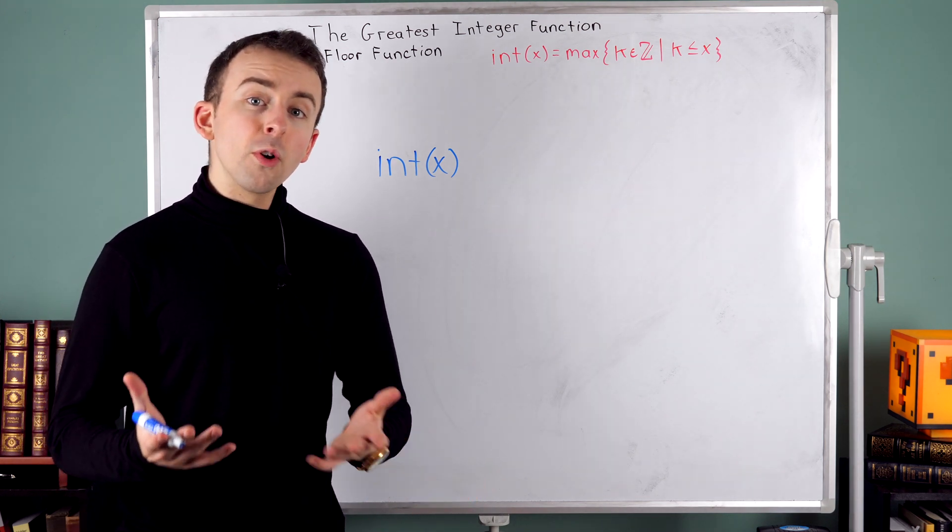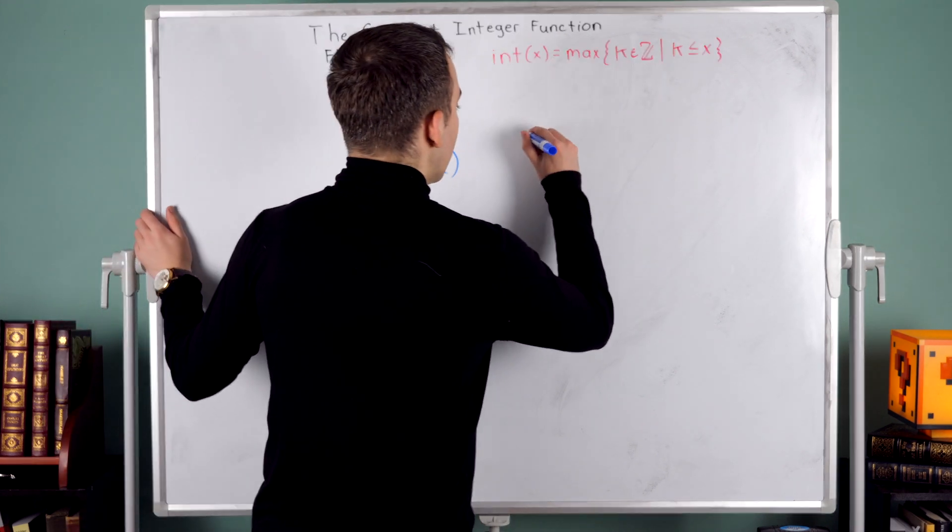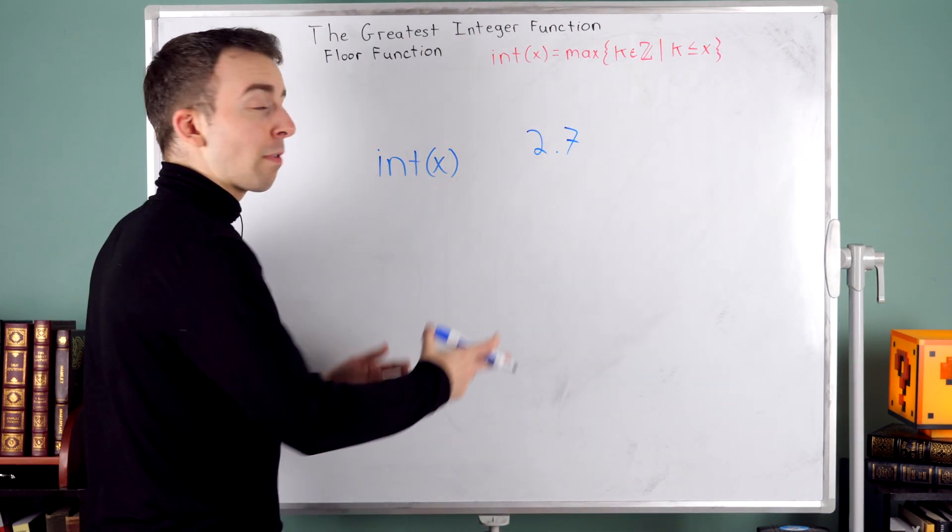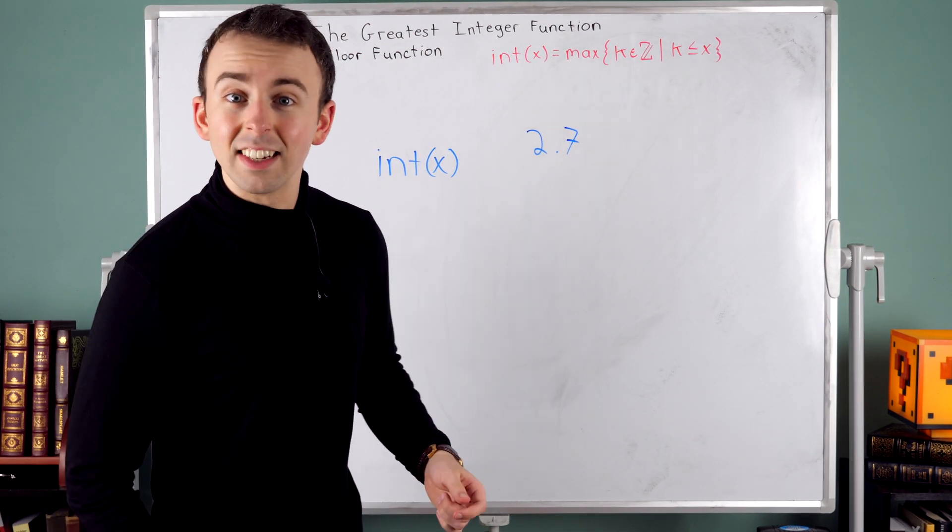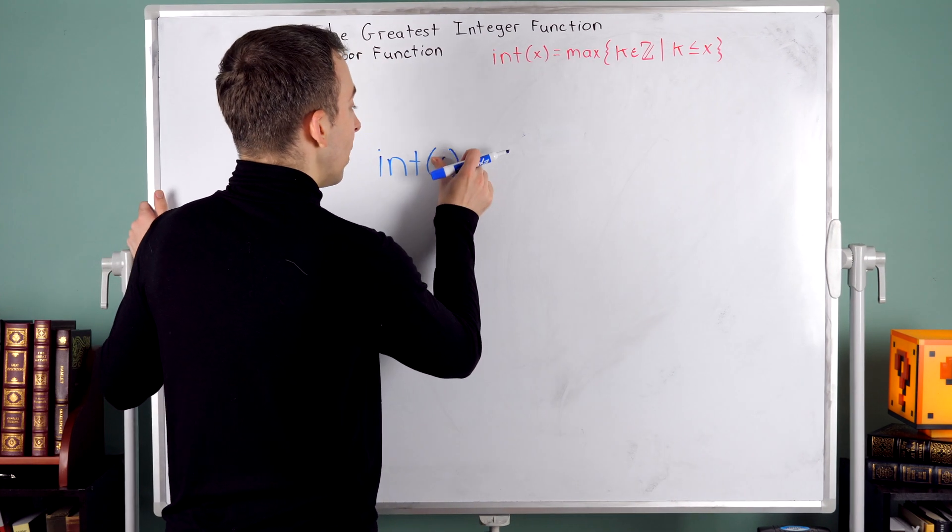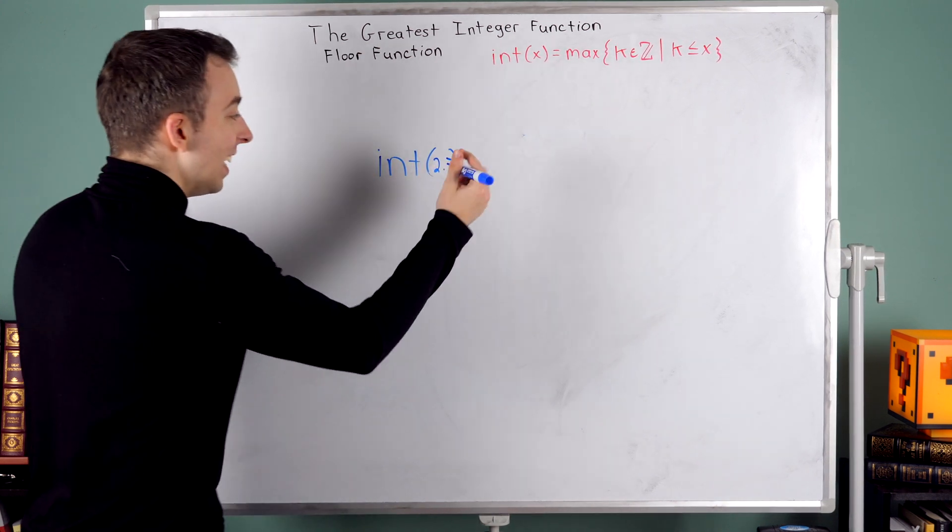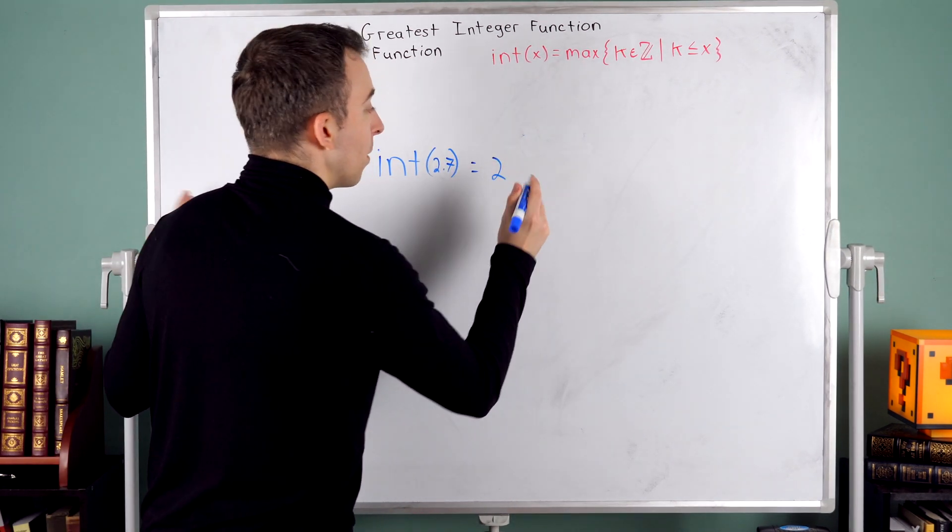So for example, if you were asked to round the number 2.7, you might say, well, that rounds up to 3 since that's the nearest integer. This int function would round 2.7 down. So if we put 2.7 into that int function, it rounds it down to 2.